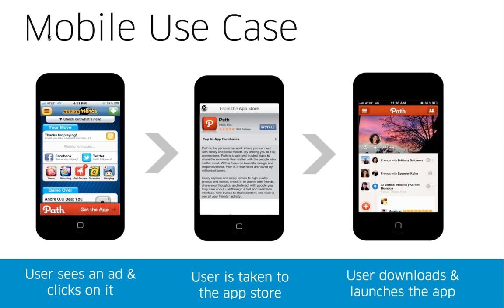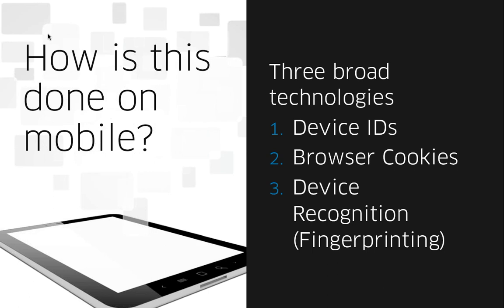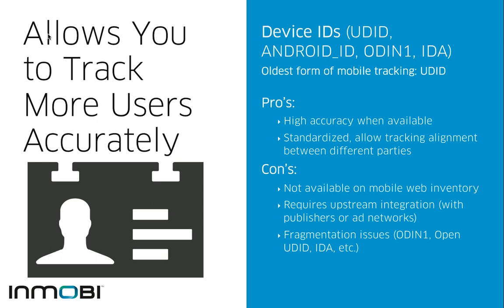On mobile, there are different types of technologies that allow you to link a conversion event back to an impression or click event. Those three broad technologies are device IDs, browser cookies, and device recognition or device fingerprinting. The first one I'd like to talk about is device IDs, which is probably one of the oldest forms of tracking on mobile.